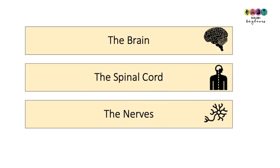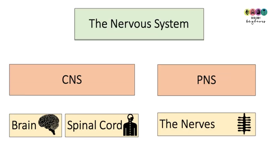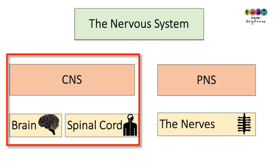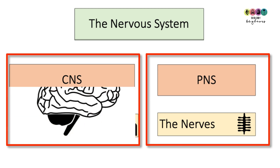Your nervous system is made up of your brain, the spinal cord, and your nerves. It's further subdivided into the central nervous system and the peripheral nervous system, and it's really important that you know both.